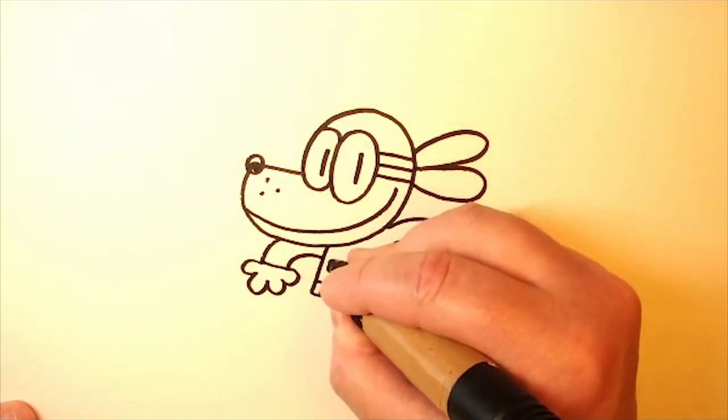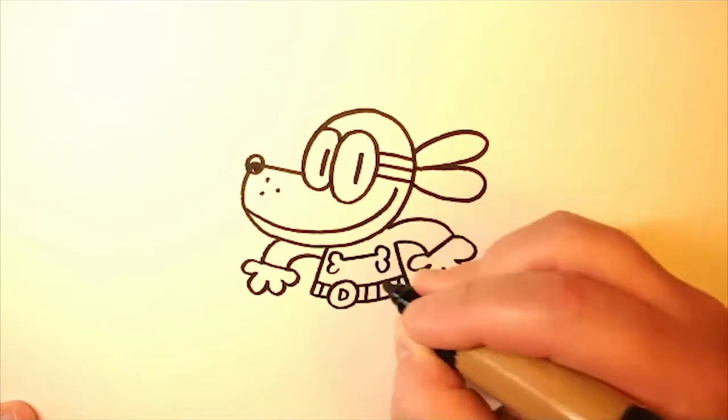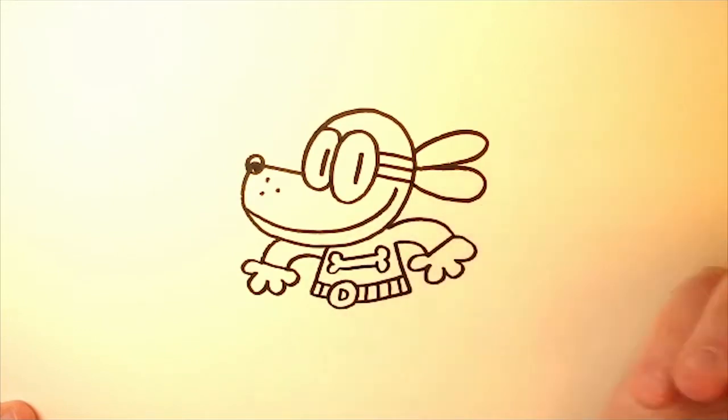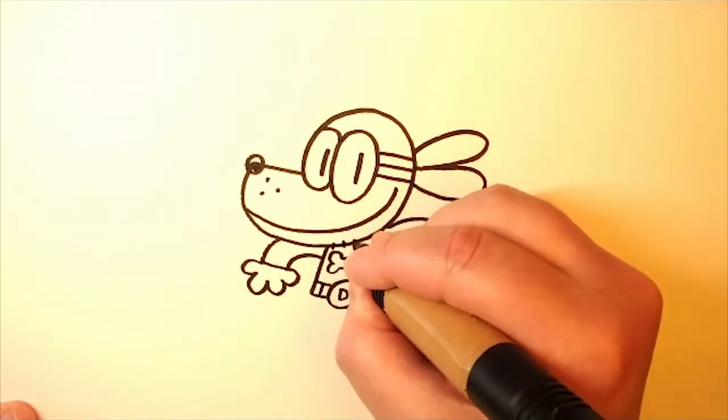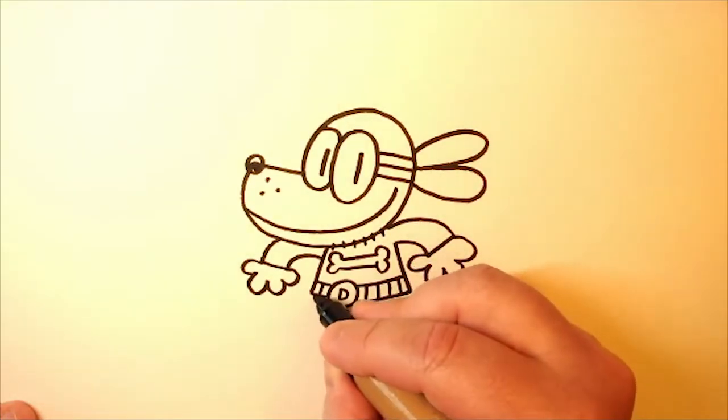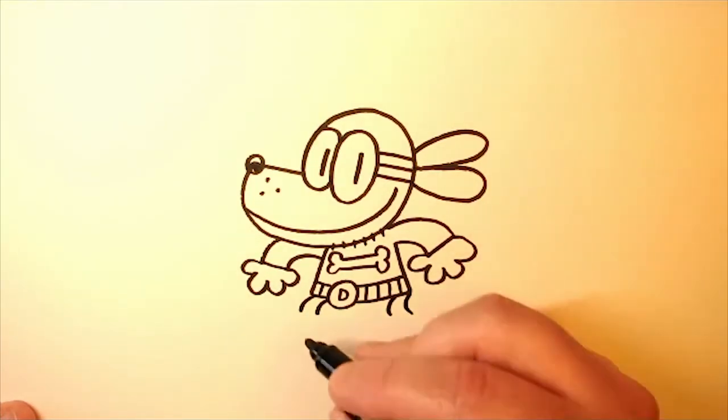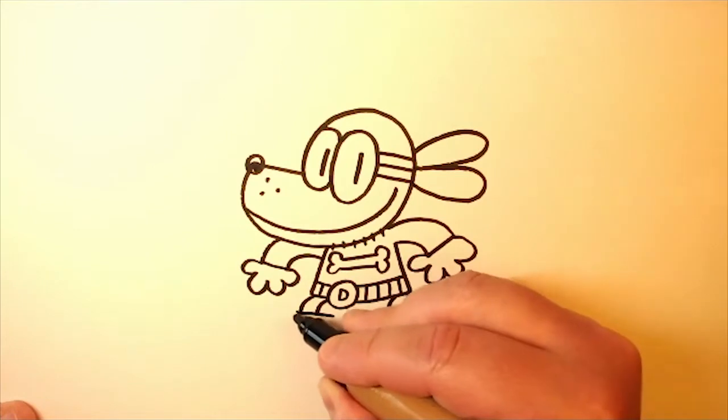And then we add the bone on his chest and some stitches, and then some little bendy macaroni-type legs and some big boots here.